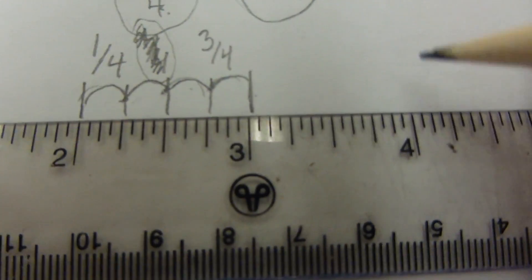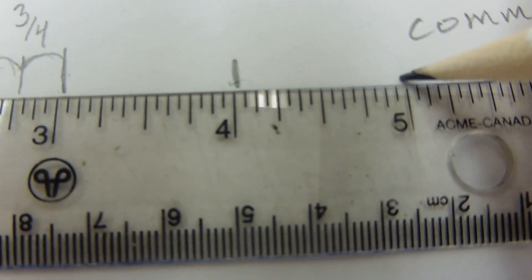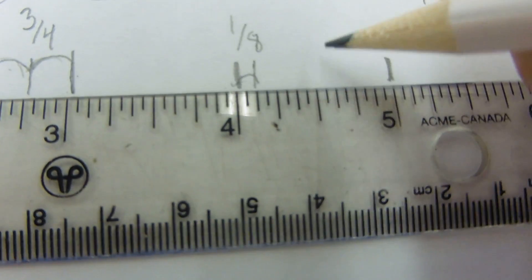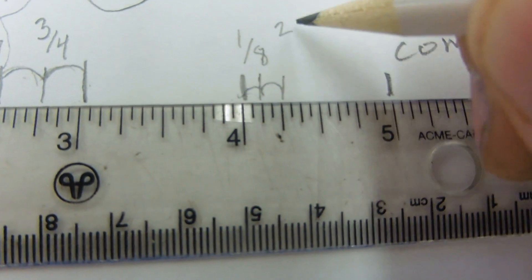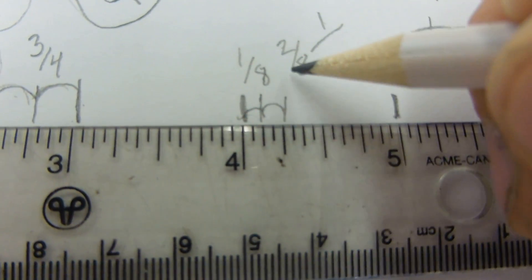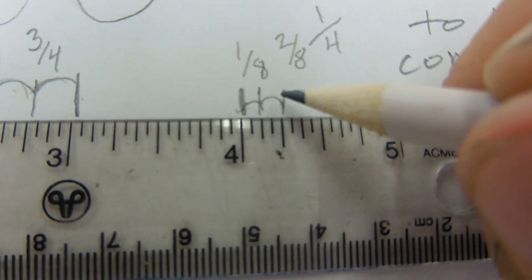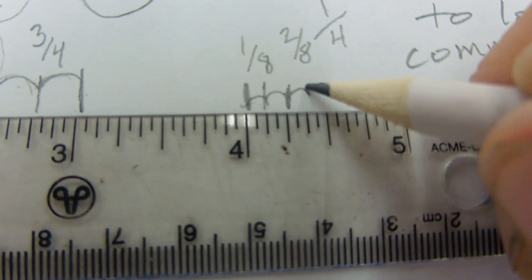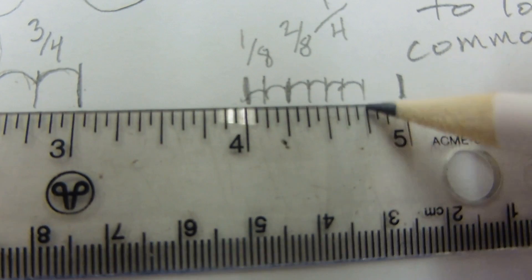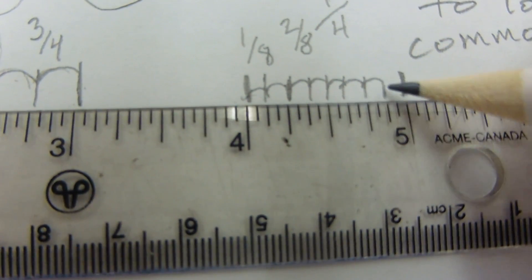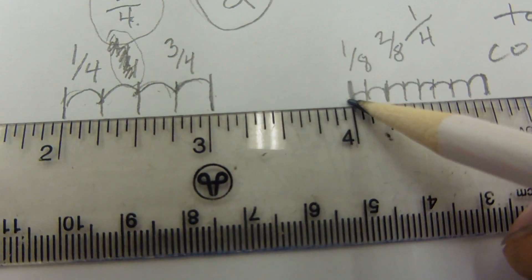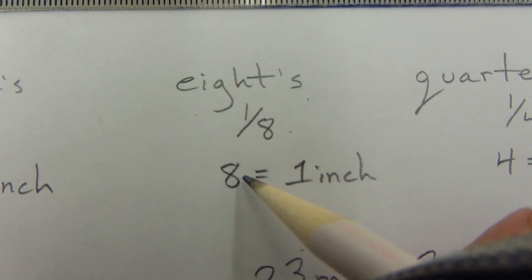We can also go down to eighths. From here to here is one inch; from there to there is one eighth. From there to there is another eighth — that's two eighths. Can two eighths be reduced? Yes. Two goes into two once, two goes into eight four times, so that's actually one quarter. Then three eighths, four eighths which reduces to one half, five eighths, six eighths which reduces to three quarters, seven eighths, and one inch. Eight eighths equals one inch, four quarters equals one inch, two halves equals one inch.